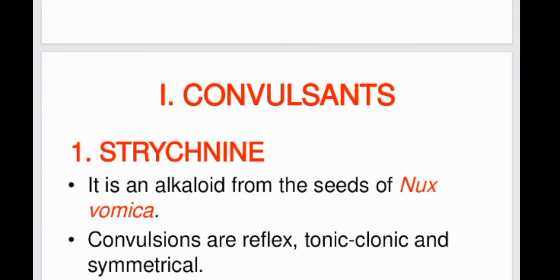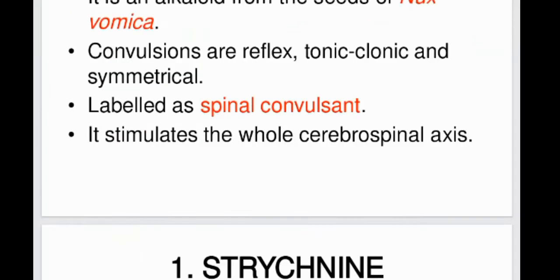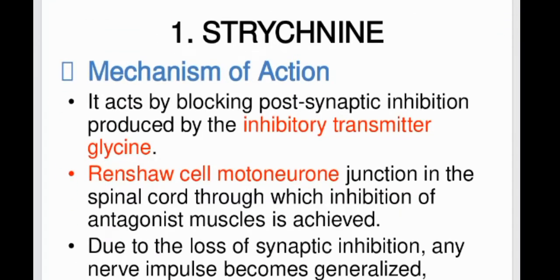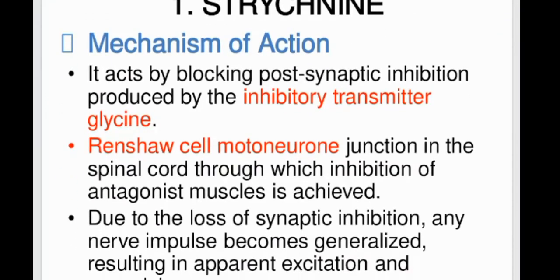Convulsants — strychnine is an alkaloid from the seeds of Nux vomica and is labeled as a spinal convulsant. Its mechanism of action involves blocking post-synaptic inhibition produced by the inhibitory transmitter glycine.